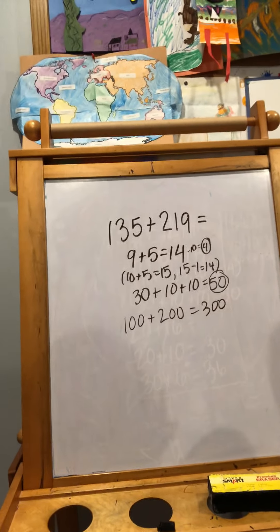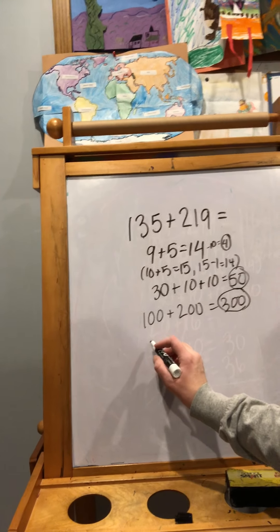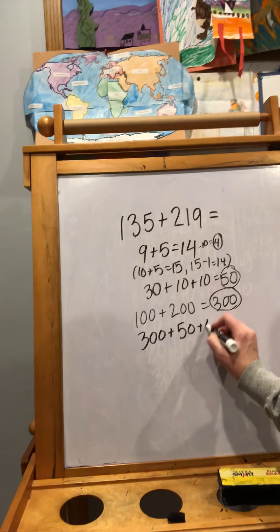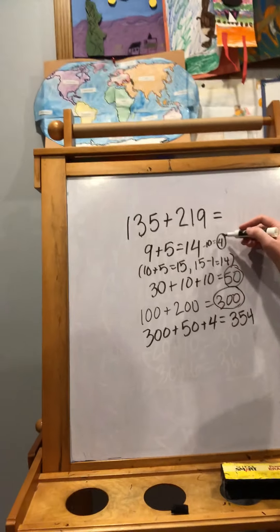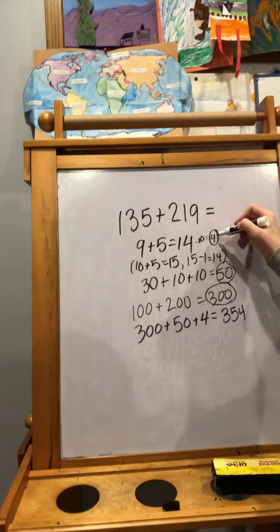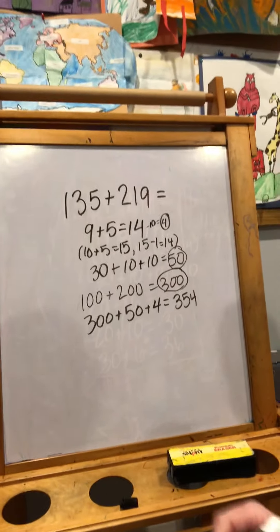So the answer is 354. And how did you know that? Because it said 300 plus 50 plus 4 and that's expanded form of 354. Okay, so here, this was what was left from our 14, right? After we took out that 10. So then you added your ones, your tens, and your hundreds together to get 354.